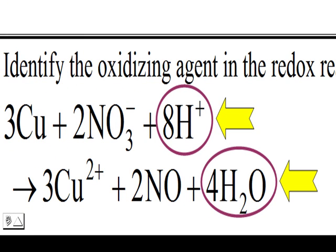Since there are no peroxides or elemental oxygen in this equation, you can assume that the oxidation number of oxygen remains as negative 2 in all species which contain it. The 8H plus and the 4H2O can be eliminated.